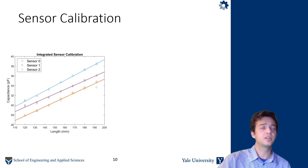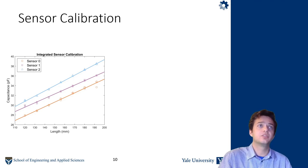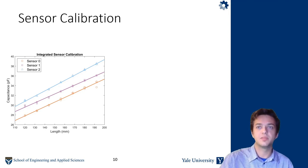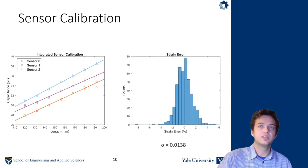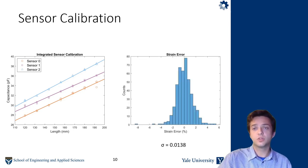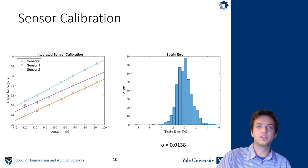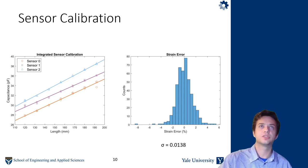So you see in the plot here, a totally linear relationship between capacitance and length for every sensor. The coefficient of restitution was higher than 99 percent, so we were able to fit a linear model that corresponds to each sensor, and the sensors were highly reliable and repeatable. Here you see a histogram of the residuals from the linear fit in units of strain, and the standard deviation here is just over one percent.